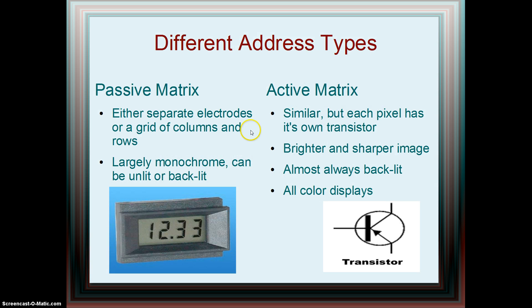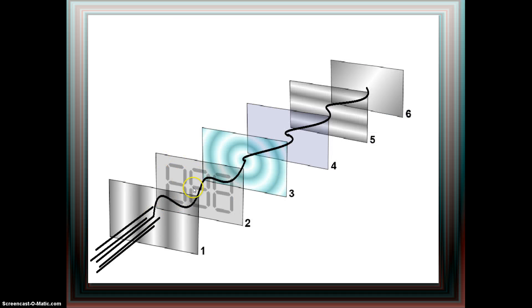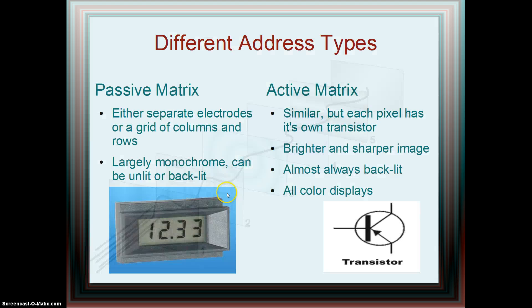What I described are passive matrix LCDs which can either use separate electrodes like the seven segment pieces used in watches and clocks, or they can also be a grid of columns of electrodes and rows of electrodes which can be used by the display to create a grid of pixels that can be individually charged to create a black pixel. These LCDs tend to be monochrome and can be either unlit or backlit with some sort of light.